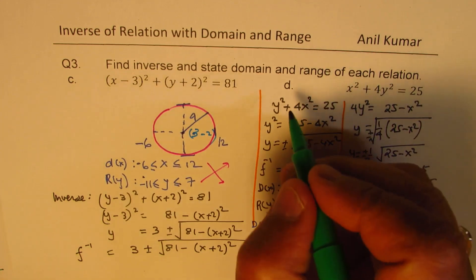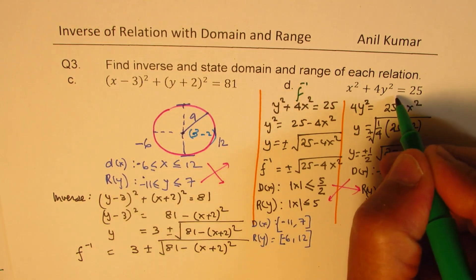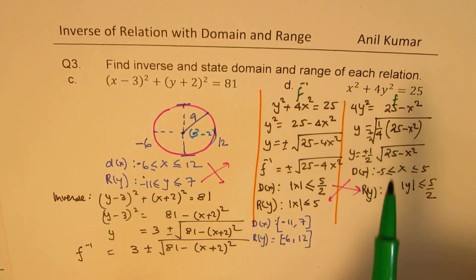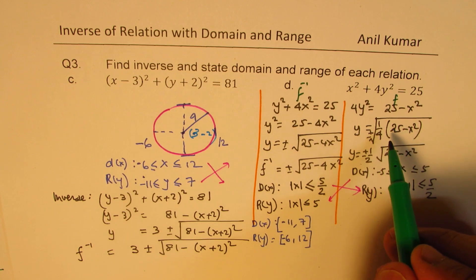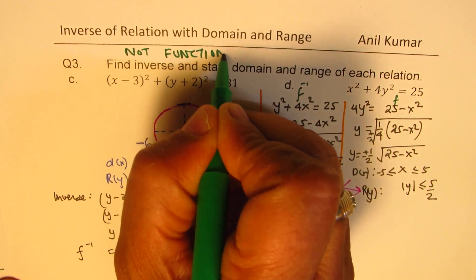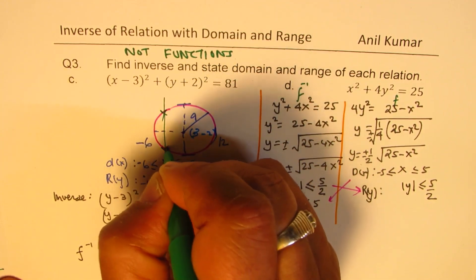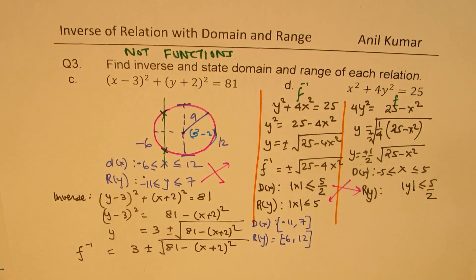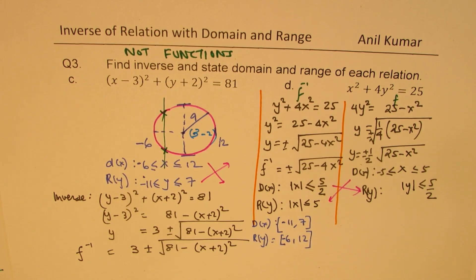So what we did was: on one side we have the inverse, and on the other side we have the relation. These are not functions — they fail the vertical line test — so these are all relations. The inverses are also relations in this case. I hope you understand and appreciate how we can find the inverse of these relations and how to write their domain and range. Feel free to write your comments, share your views, and if you like and subscribe to my videos, that will be great. Thanks for watching and all the best.